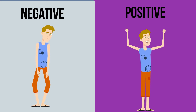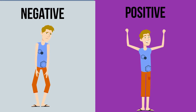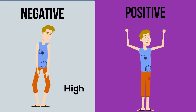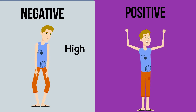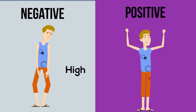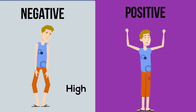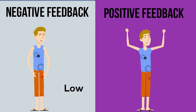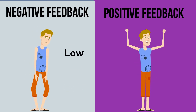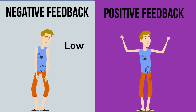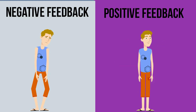A negative feedback is when the body senses something is out of equilibrium. In other words, if a level is too high, the body does something to bring it down. Conversely, if a level is too low, the body does something to raise it. Hence the term negative feedback.